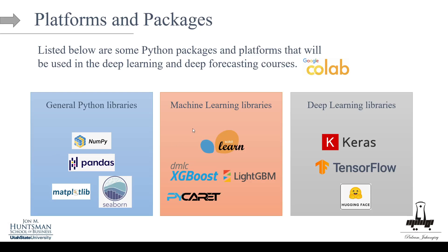For machine learning, we're going to stick to scikit-learn. When it comes to boosted trees, we will use XGBoost and LightGBM. For automated machine learning, we're going to use PyCaret. And finally, for deep learning, we're going to use Keras alongside TensorFlow. For language models and transfer learning — or transformers — we're going to use the Hugging Face API.